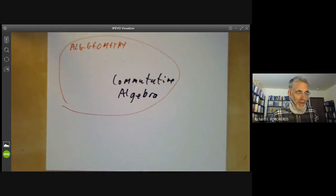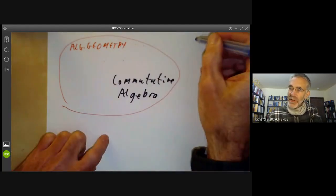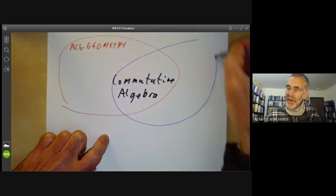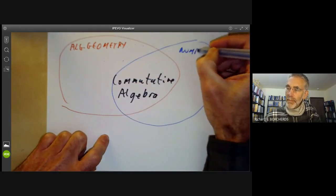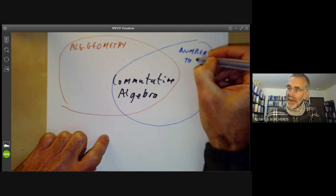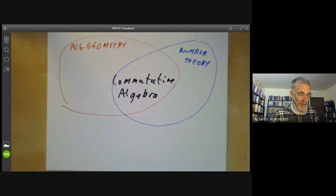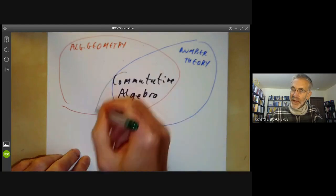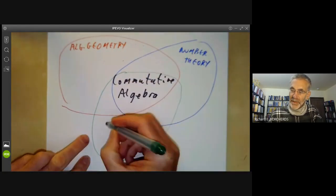Another course that uses a lot of commutative algebra is number theory. And the third one that used to use a lot of commutative algebra, but is kind of out of fashion these days, is invariant theory.